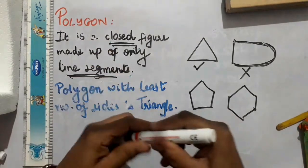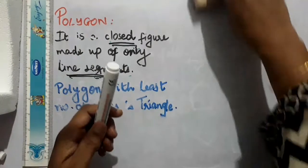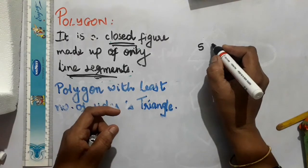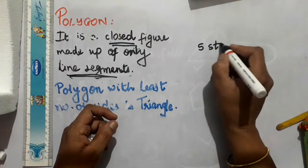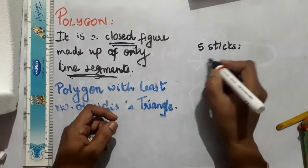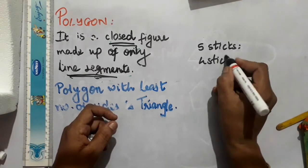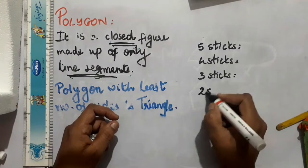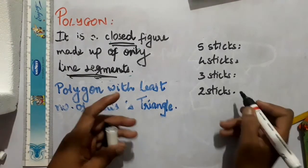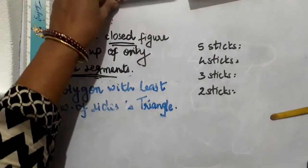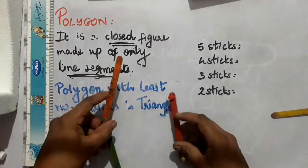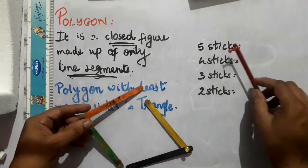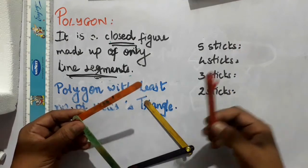Now I want to try whether I am able to form a polygon using 5 sticks, 4 sticks, 3 sticks, and 2 sticks. Here you can see I have the sticks — 3 and 2, that's 5 sticks.